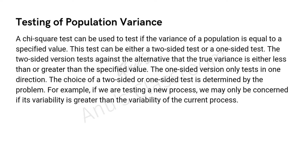A chi-squared test can be used to test if the variance of a population is equal to a specific value or not. This test can either be two-sided or one-sided. The two-sided version will test against the alternative that the true variance is either less than or greater than a specified value, while the one-sided version only tests in one direction. The choice is determined by what exactly we are trying to solve.